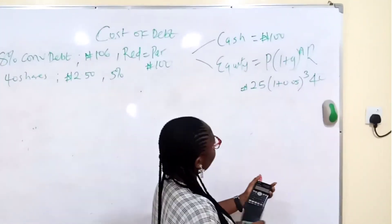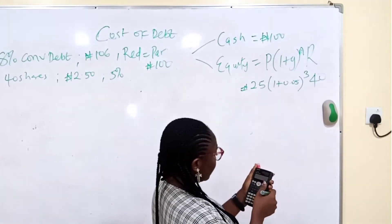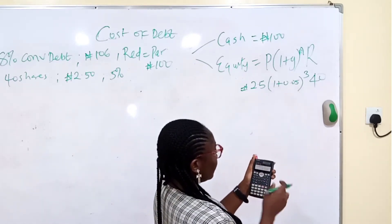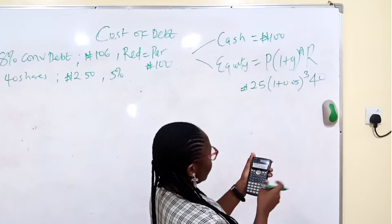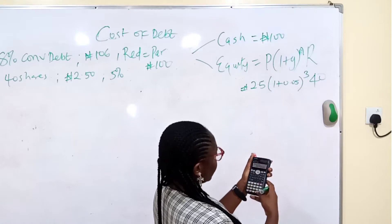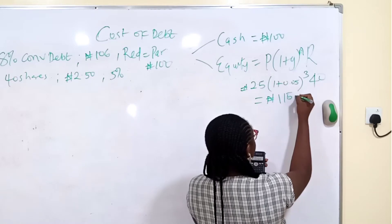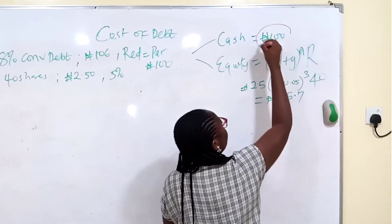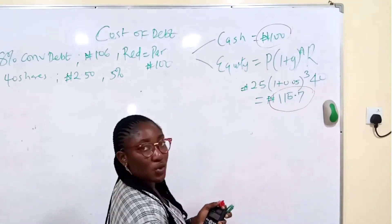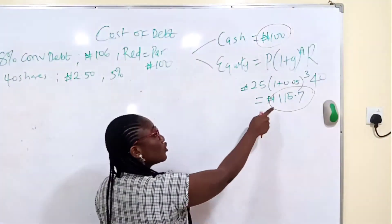Your R number of shares, that's 40. Punch all this inside your calculator. Start from the bracket now. 1.05 raised to power 3, multiply by 2.5, multiply by 40. So this will give us a value of 115.7. So if they are giving him cash, he will get 100. But if it is equity, he will get 115.7. Which one will you pick if you are the investor?